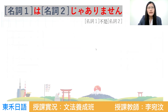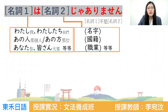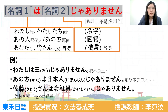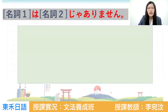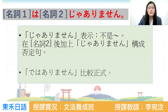來看例子：私は王じゃありません（我不是王）；あの方は日本人じゃありません（他不是日本人）；佐藤さんは会社員じゃありません（佐藤先生不是公司職員）。です變じゃありません就是否定。ではありません是比較正式的書面用法。